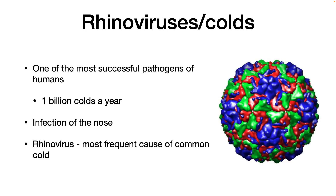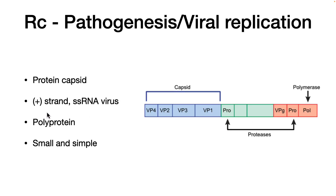First of all, it has a protein capsid, and you can see that in this drawing right here. It's a 20-sided structure that forms a protective sphere around the nucleic acid. The nucleic acid is a positive strand single-stranded RNA virus. The first four proteins form the capsid, then you have a protease that degrades this protein. It makes a polyprotein — the single-stranded RNA genome is translated into one big protein and then the protease chops it up into the various proteins. So there's the protease, the capsid, and the polymerase. It's a very small, straightforward, and simple virus.